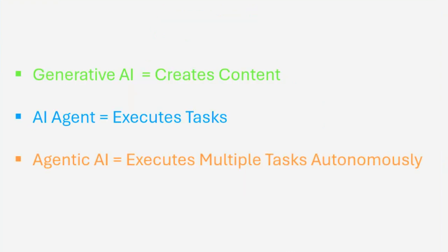So in short: Generative AI creates content, AI agents take actions for you, and Agentic AI combines multiple agents to manage complex end-to-end tasks. That is the evolution from Generative AI to AI agents and finally to Agentic AI. Thank you for watching.